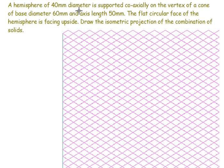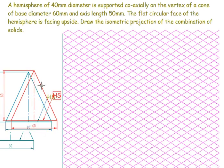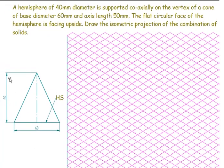A hemisphere of 40mm diameter is coaxially supported on the vertex of a cone. We need to draw this hemisphere placed over the cone, where the cone has a base diameter of 60 and an axis length of 50. Looking at the cross-section, the cone sits on a horizontal surface, and above it we need to place the hemisphere.